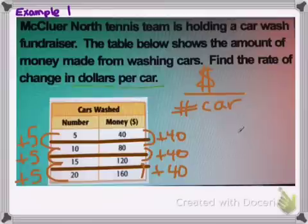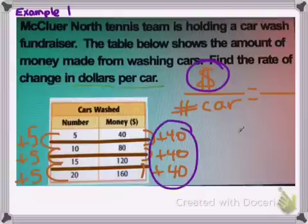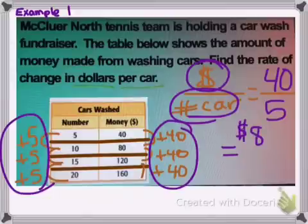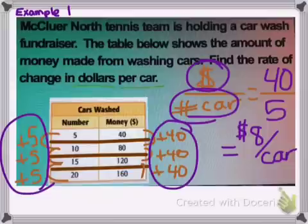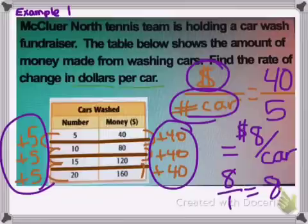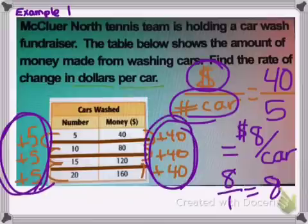Now we're going to fill in our ratio here. The money, that's this side, is 40. The number of cars, which is this side, is 5. In reducing that fraction, we have $8 per car, per one car. So, our rate of change is 8, or $8 per car, or you can leave it 8 over 1. Any of those things would be okay. So for my table, you just look for the change and make a ratio.